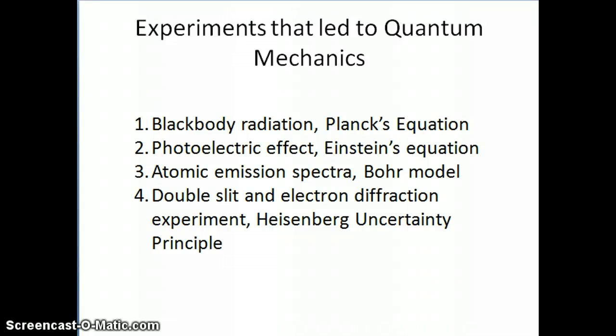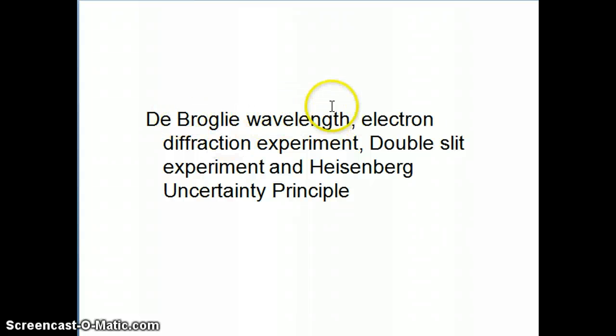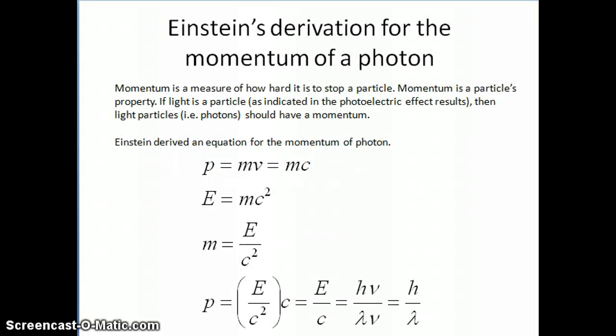Hi everyone, so today we're going to continue and talk about the last of the experiments that eventually led to the development in quantum mechanics. That is the set of experiments referred to as the double-slit experiment in electron diffraction, and then we're going to talk a little bit about something called the de Broglie wavelength for a particle, and we're also going to mention the Heisenberg uncertainty principle while we're discussing these experiments. Let's get started.